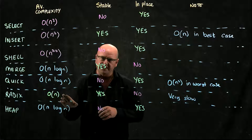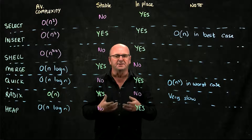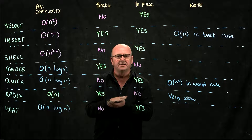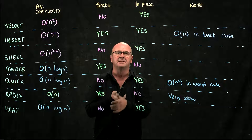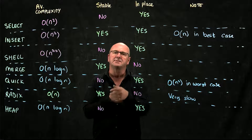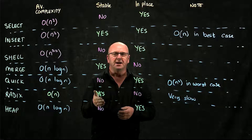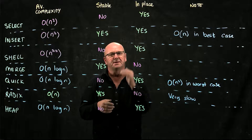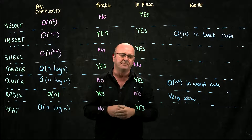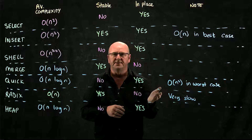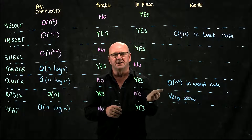We have the radix sort, which is like the mechanical sorter you would use to sort mail. You start by sorting by the ones digit, then by the tens, then by the hundreds, then by the thousands, and so on. Radix sort is stable, but it's not in-place because you have to keep copying everything into the appropriate bucket and then copying it back out again. Radix sort is really very slow because of all that copying, so it's not typically used.